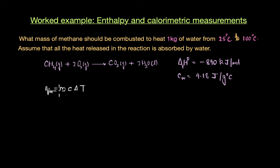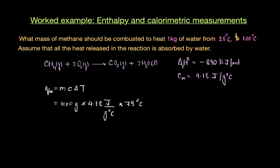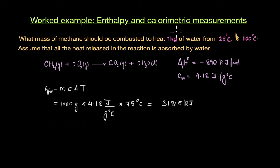We already have information about mass, specific heat capacity, and the change in temperature, so we simply substitute these values into this equation. When we do that, we get the final answer as 313.5 kJ. This is the amount of heat energy that needs to be supplied — or that has to be absorbed by water — to raise its temperature.